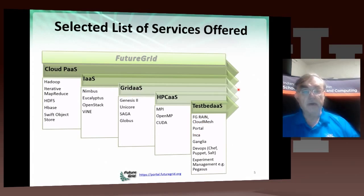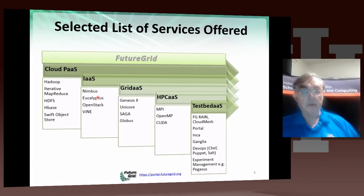Here are the various services we offer. We offer cloud services including MapReduce, the Hadoop file system, HBase, and the Swift Object Store. For infrastructure as a service, we offer Nimbus, Eucalyptus, OpenStack, and also the virtual networking system Vine. In the grid area, we have Genesis, Unicore, Saga, and Globus. For HPC, we have MPI, OpenMP, and CUDA.